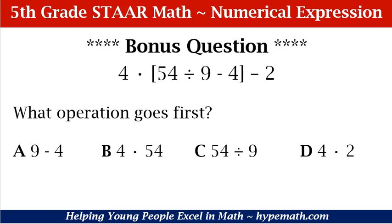Now we have a bonus question. This question is not in the workbook. However, I felt like we needed to have a little bit more work or have another problem where we use order of operations. So if you can grab a piece of paper or a scratch piece of paper to work this problem or write it somewhere, let's go over this problem just to make sure we have the order of operations down pat. So it's 4 times, in brackets, 54 divided by 9 minus 4, close bracket, minus 2. Our question is: what operation goes first? A: 9 minus 4. B: 4 times 54. C: 54 divided by 9. D: 4 times 2.